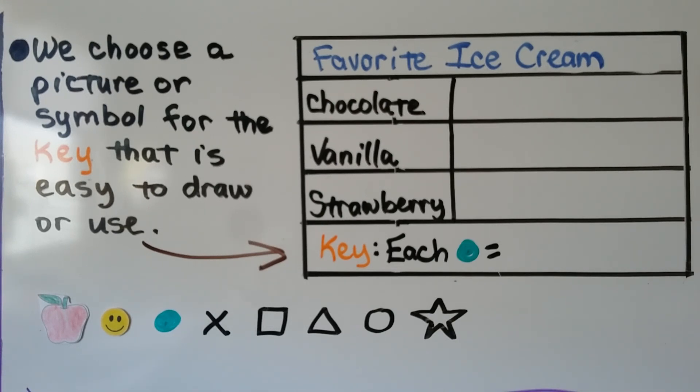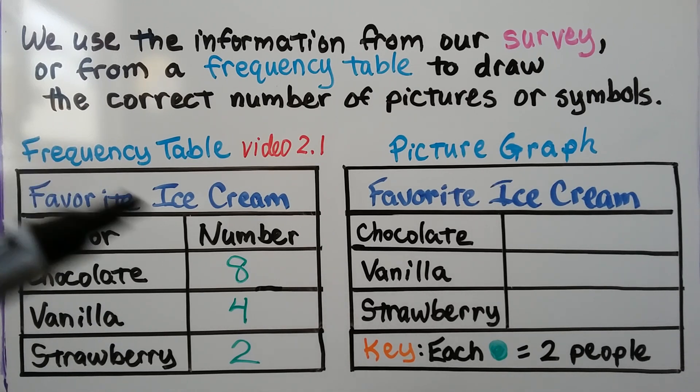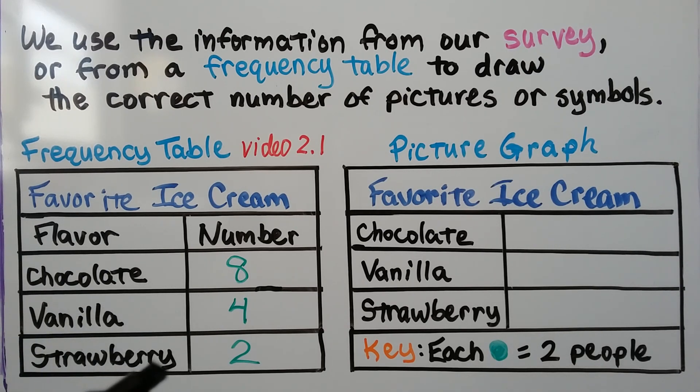We use the information from our survey or from a frequency table to draw the correct number of pictures or symbols. If our frequency table, which we learned about in video 2.1, shows 8 for chocolate, 4 for vanilla, 2 for strawberry, then that's how we would finish our picture graph.